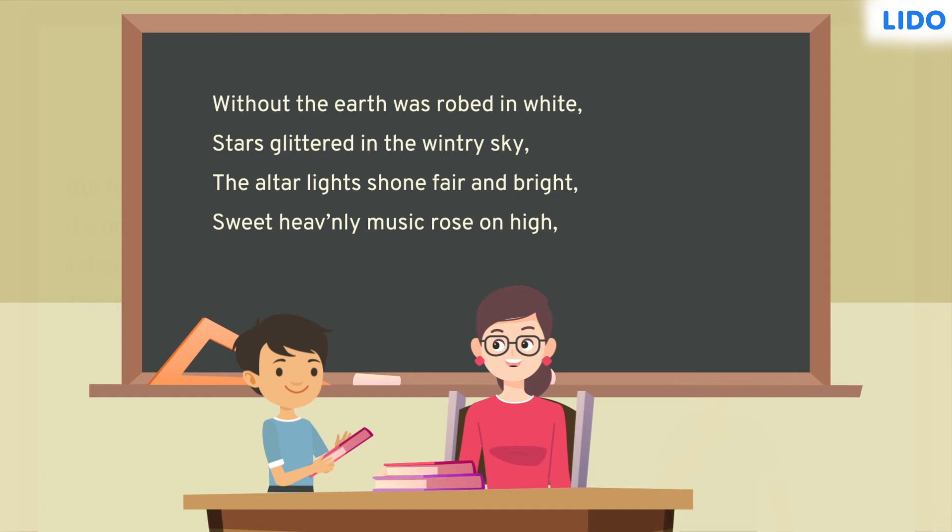Step 1. To understand the rhyme scheme of any poem, we only look at the last word of each line. The rest of the words play no role.